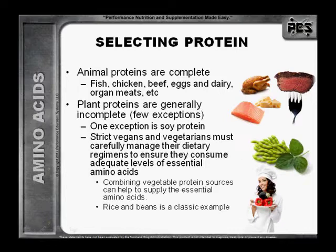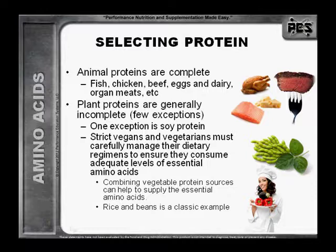Plant proteins are generally incomplete, with few exceptions. One exception is soy protein. Strict vegans and vegetarians must carefully manage their dietary regimens in order to ensure they consume adequate levels of essential amino acids. Combining vegetable protein sources can help supply the essential amino acids — rice and beans is a classic example.